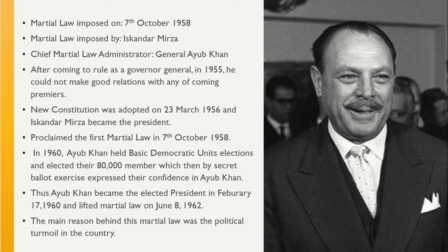In 1960, Ayub Khan held Basic Democratic Unit selections and elected 80,000 members, which then by secret ballot expressed their confidence in Ayub Khan. Thus, Ayub Khan became the elected president on February 17, 1960, and lifted martial law on June 8, 1962. The main reason behind this martial law was the political turmoil in the country.